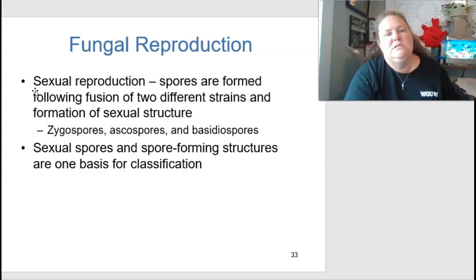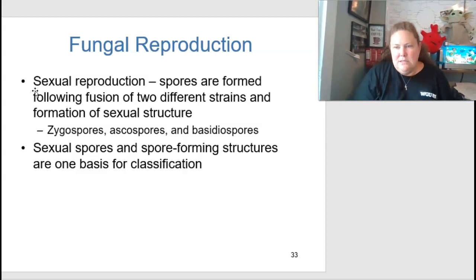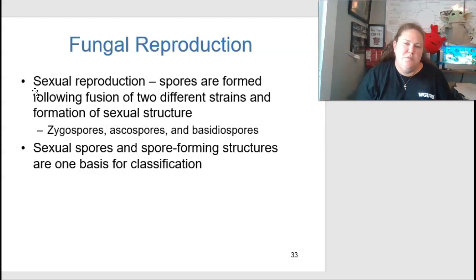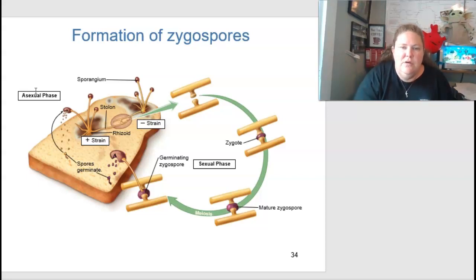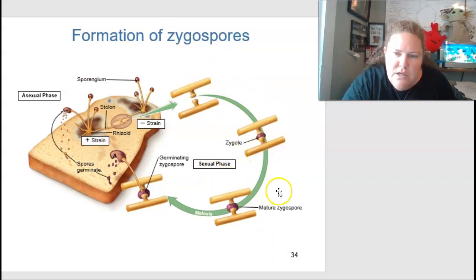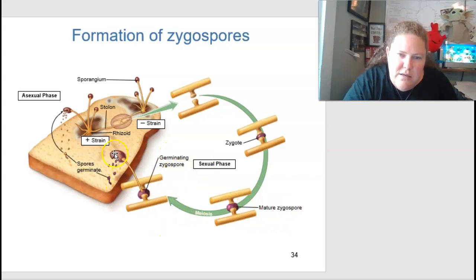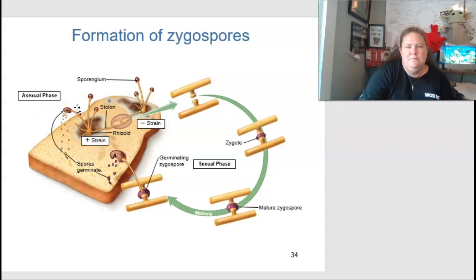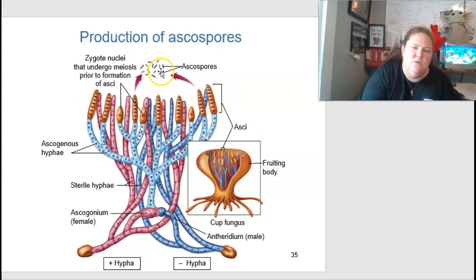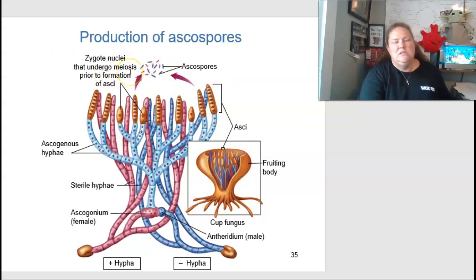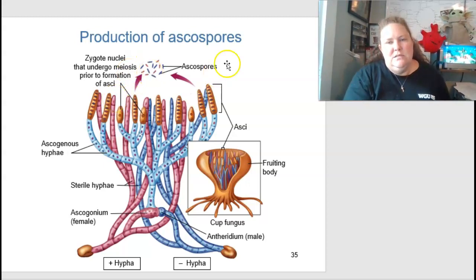For sexual reproduction, spores are formed following the fusion of two different strains and formation of a sexual structure. These include zygospores, ascospores, and basidiospores. Looking at bread mold, you have positive and negative strains, sexual phases forming a zygote, a mature zygospore, and a germinating zygospore that releases spores. Ascospore production involves a fruiting body where zygote nuclei undergo meiosis prior to ascospore formation, involving male and female hyphae.